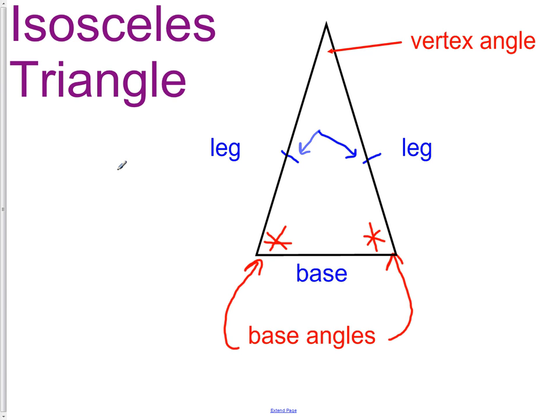There are some other parts of an isosceles triangle that we should know the names of. First off, we have the vertex angle. That is the angle that is formed by the two legs.